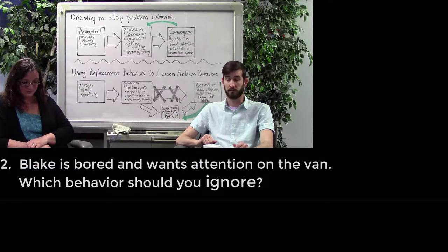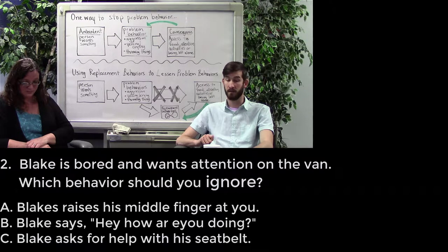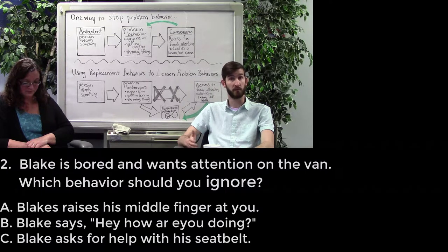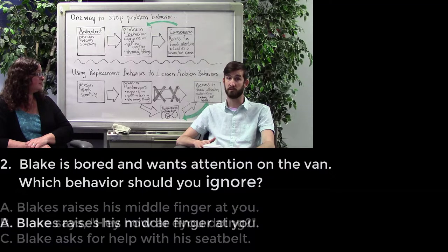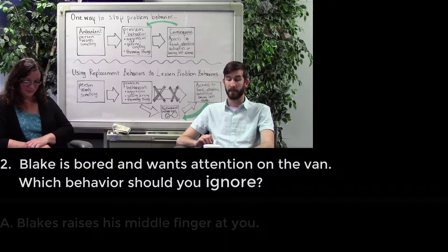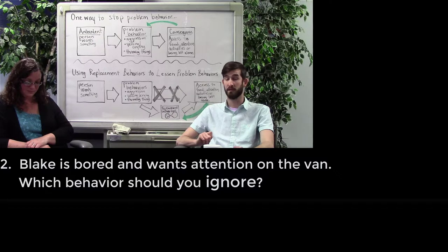The second ASR is Blake is bored and wants our attention on the van. Which one are we going to ignore? So sometimes we need to ignore problem behavior because we've talked about in this video how when we accidentally reinforce problem behavior. So this is a really good example of accidentally reinforcing problem behavior. So if he's bored and he wants our attention on the van, he's going to A, raise his middle fingers to you in the mirror. Or do we ignore Blake saying to us, hey, how are you this morning? Or do we ignore Blake saying, I need help with my seatbelt? Well, the answer is obviously A. We need to ignore Blake raising his middle fingers to us in the mirror.